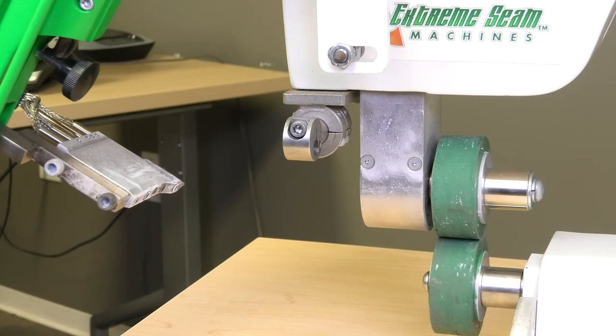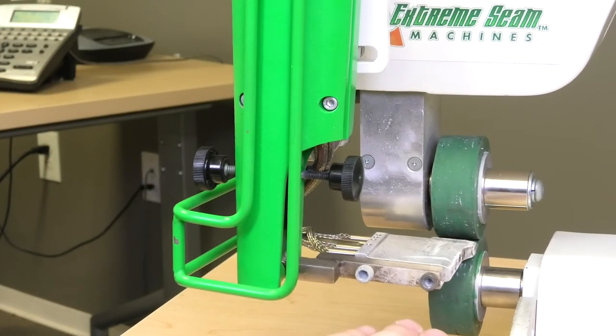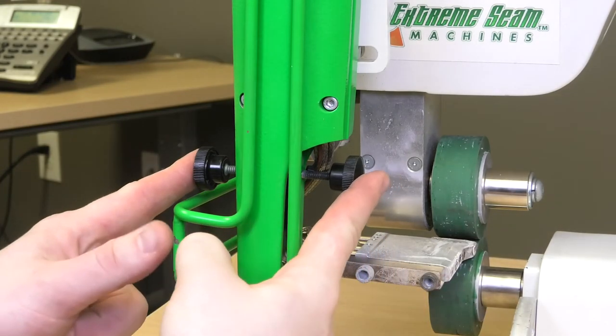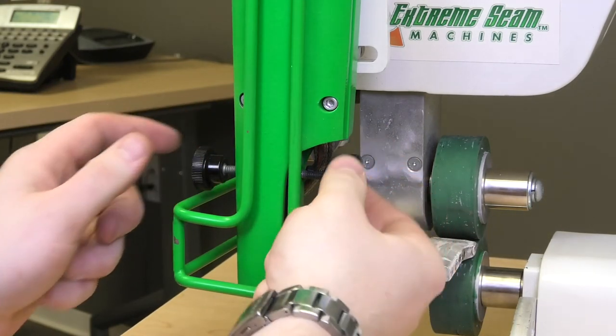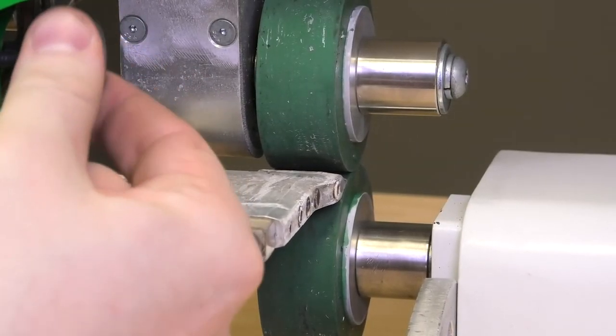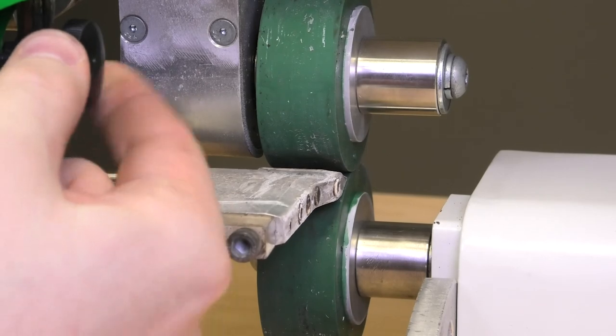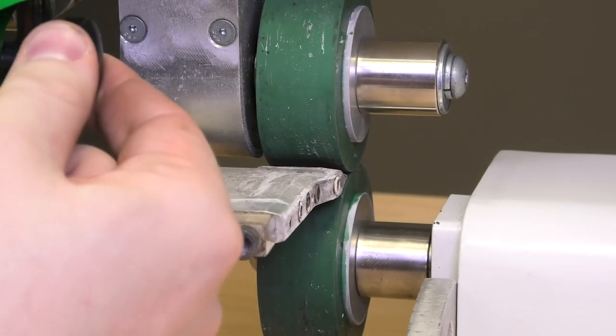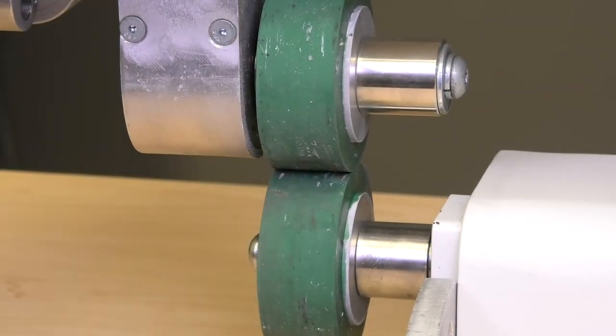We also have our tilt adjustment. What I mean by the tilt is how our wedge goes in. So as you can see, we have these two knobs. If you loosen one and screw up the other, it will start leveling out that wedge. You just want to make sure our wedge is going right into those wheels and it is nice and level with the bottom roller.